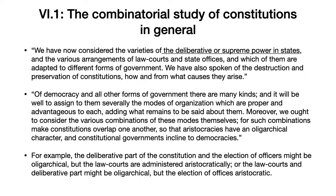Then he says we've also spoken of the destruction and preservation of constitutions, how and from what causes they arise. This is clearly a reference to Book 5 and the discussion there of the causes of stasis, instability, faction, civil war, and also Aristotle's recommendations about how to preserve every kind of constitution, including tyranny and kingship, but especially emphasizing democracies, oligarchies, and the most stable form, polities or republics.